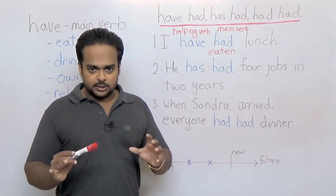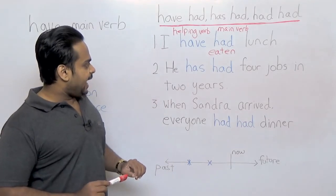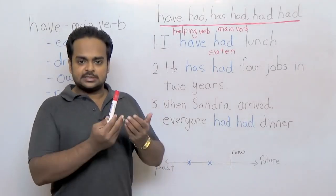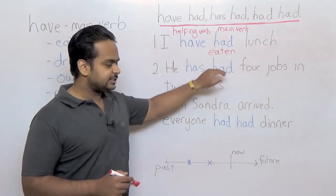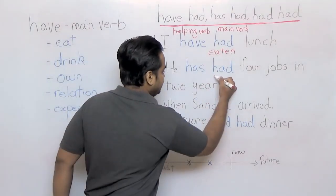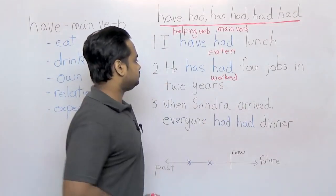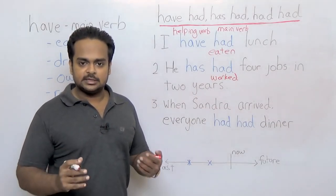Alright, with this knowledge, let's now look at the second sentence. He has had four jobs in two years. Once again, we're going to separate the two haves. This is the helping verb and this is the main verb. And the meaning of the main verb here is worked.